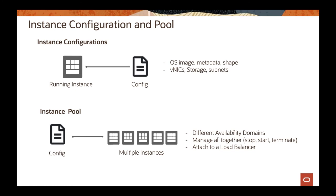You can also attach those instances to a load balancer. So if you have an application running behind a load balancer and you want to scale horizontally and add more instances, you can increase the pool size and those instances will be automatically associated to the load balancer you defined in the configuration. Instance configuration and pool will actually be one of the basics for autoscaling, which we'll talk about in part three of the presentation.